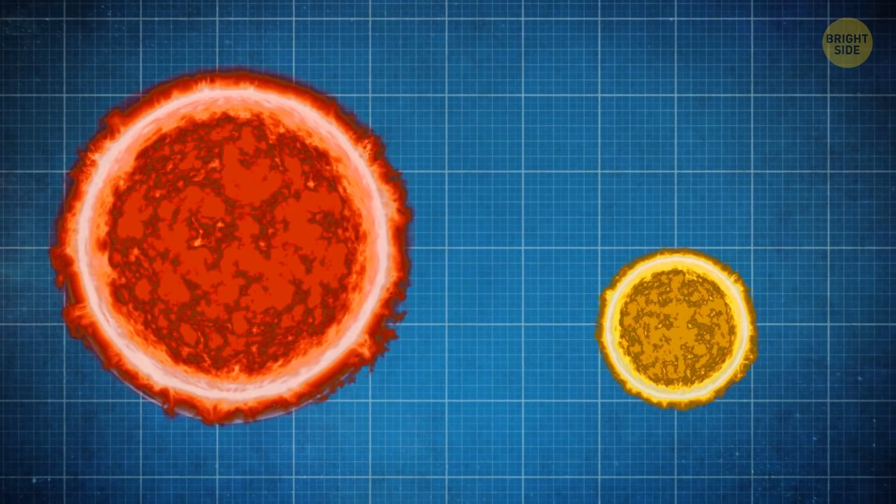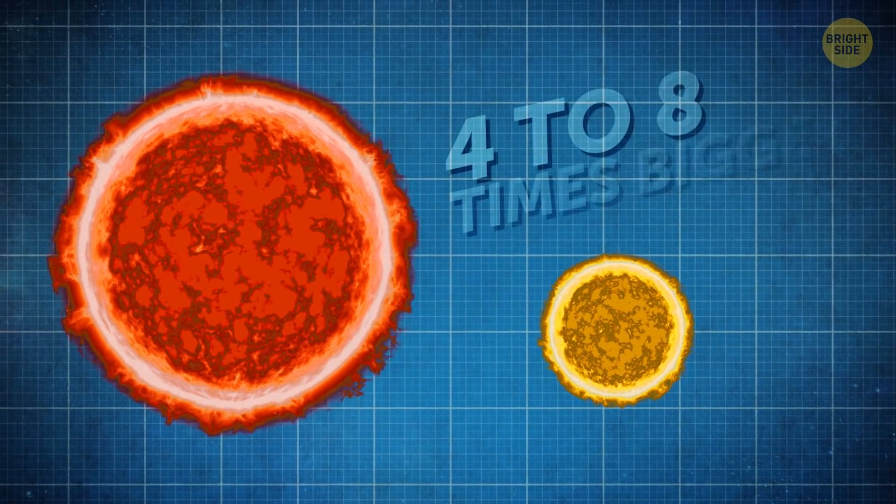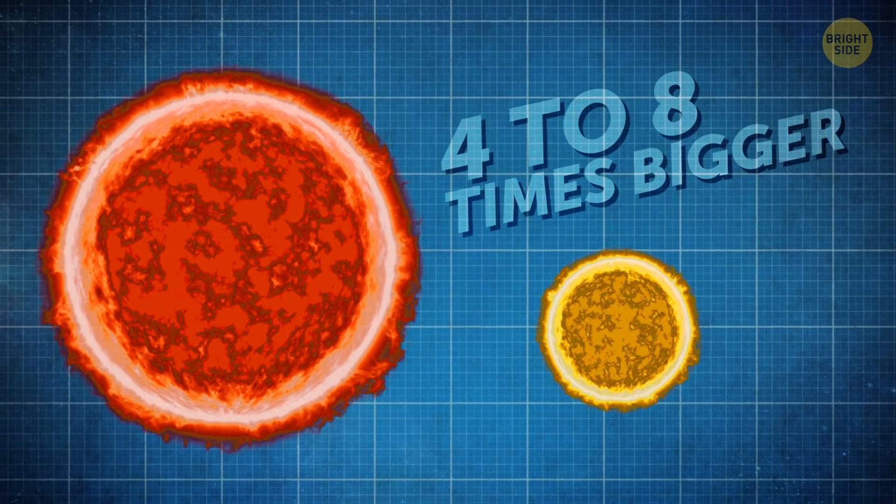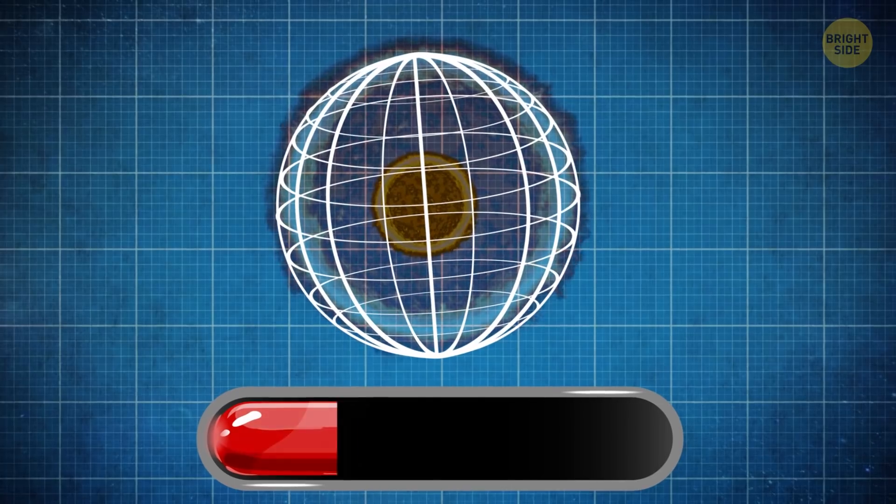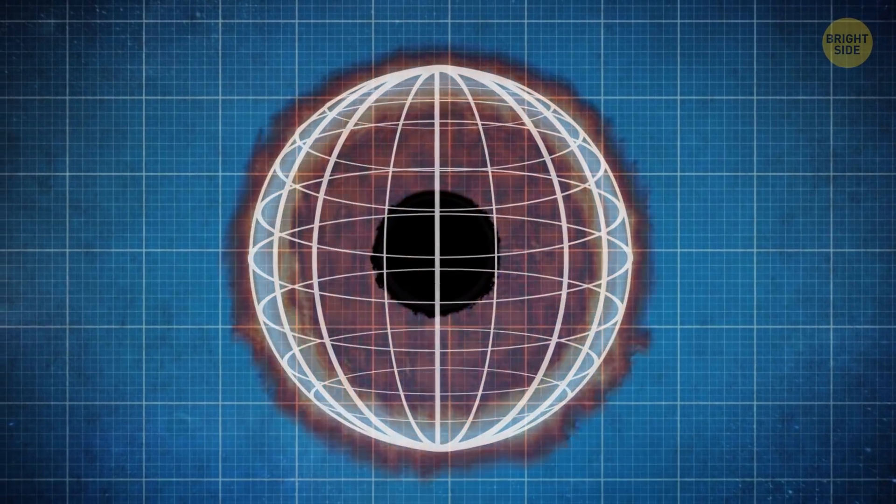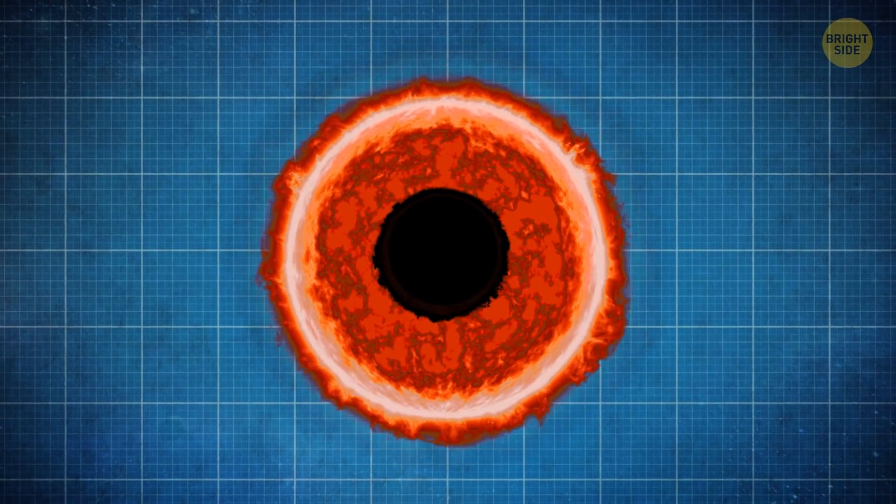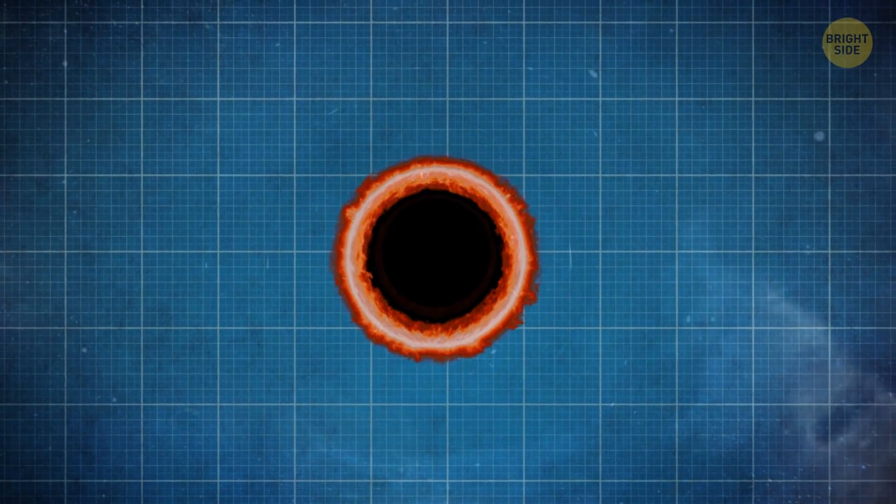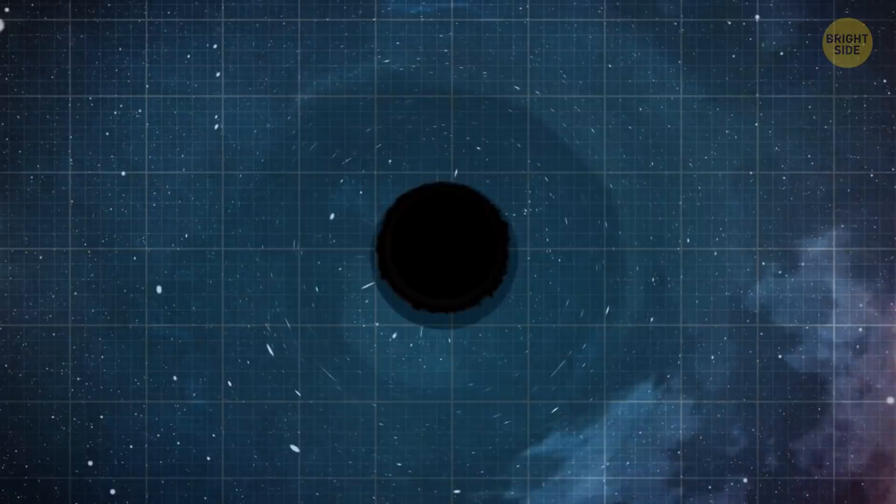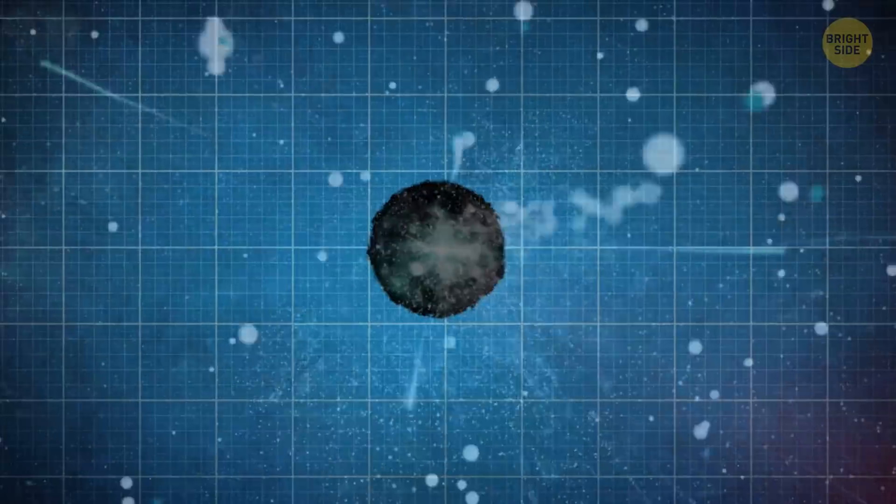But once a star becomes too old and massive, about 4 to 8 times bigger than our Sun, it doesn't have any more fuel left. That's why all the reactions in its core stop. The star's outer layers instantly try to collapse inward, but they bounce off the core, which remains incredibly dense. That's when everything but the star's core explodes in a fiery supernova.